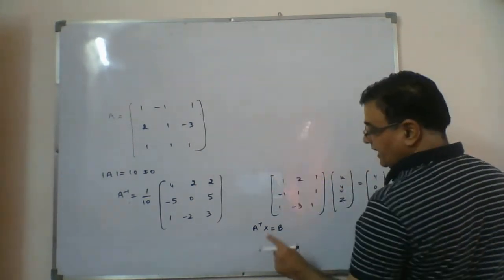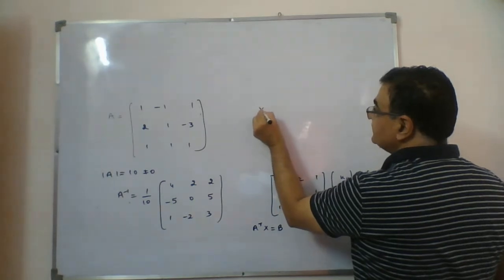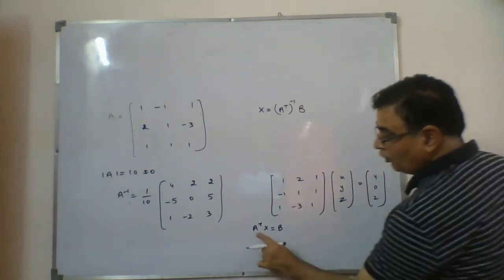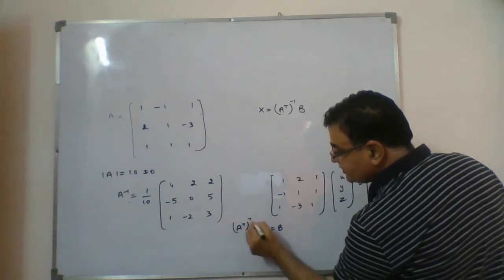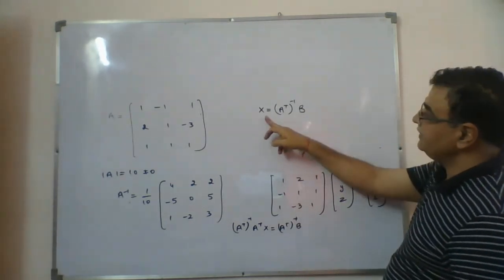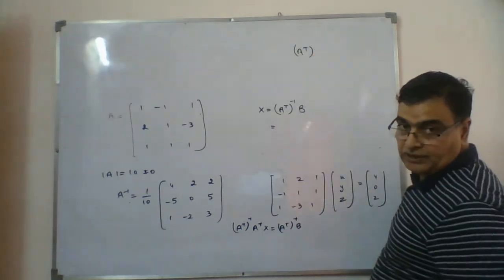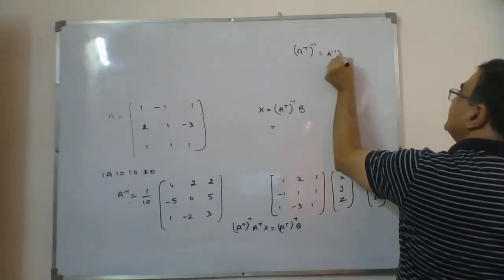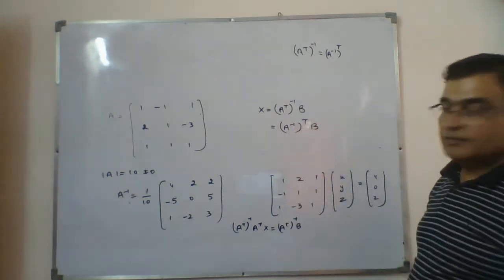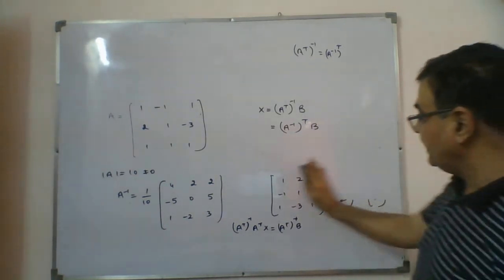Since the determinant of A transpose is not 0, we need A transpose inverse this time. So x = (A transpose)⁻¹ · B. We use the property that (A transpose)⁻¹ = (A⁻¹) transpose. So this changes to (A⁻¹)ᵀ · B. We already know A inverse, so the problem is solved — we just transpose A inverse and multiply by B.